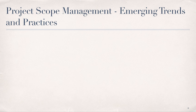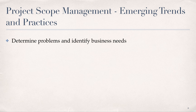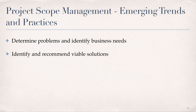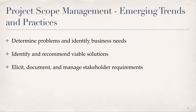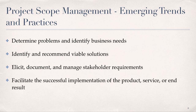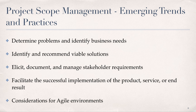There are a number of emerging trends related to project scope management discussed in the PMBOK, including eliciting, documenting, and managing stakeholder requirements. These practices include determining problems and identifying business needs, identifying and recommending viable solutions for meeting those needs, eliciting and managing stakeholder requirements in order to meet business and project objectives, and facilitating the successful implementation of the product, service, or end result of the program or project. For agile environments, the focus is on ongoing discovery and refinement of requirements using incremental product releases, where the requirements identified in the project scope and work breakdown structure constitute the backlog.